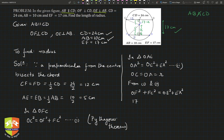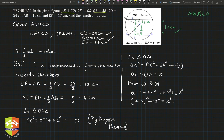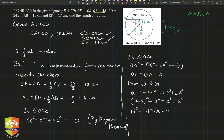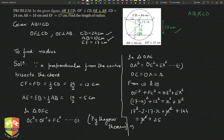Expanding using the identity (a − b)² = a² − 2ab + b²: 17² − 2×17×x + x² + 144 = x² + 25. The x² terms cancel from both sides. So: 289 − 34x + 144 = 25. Taking 25 to the left-hand side gives 289 + 144 − 25 = 34x.